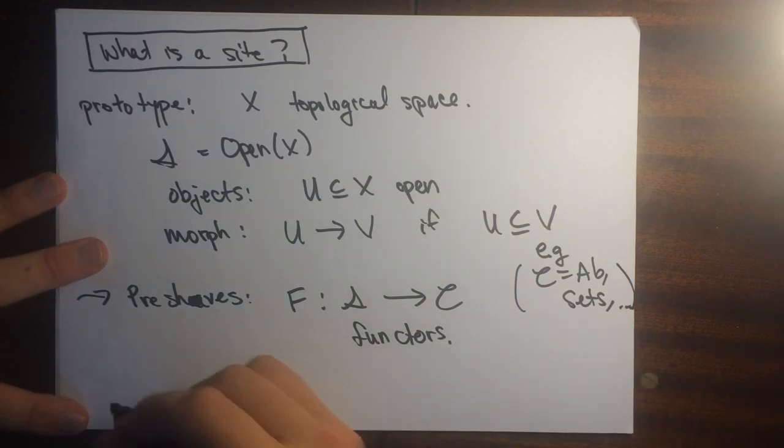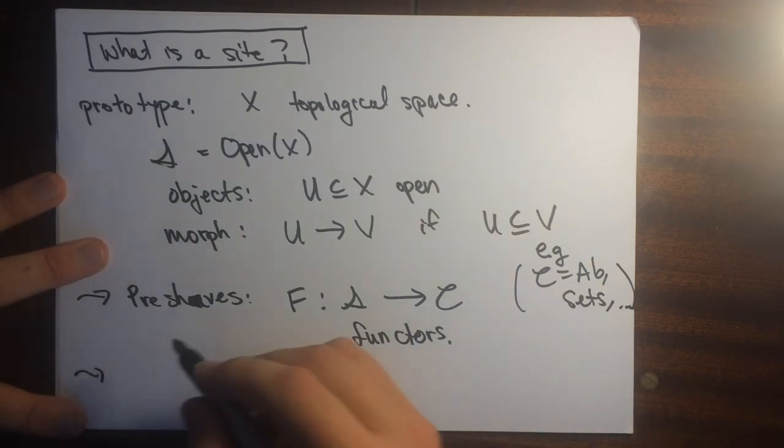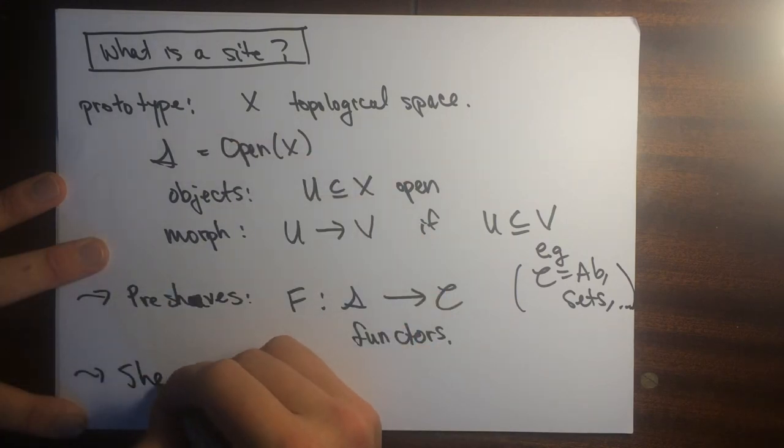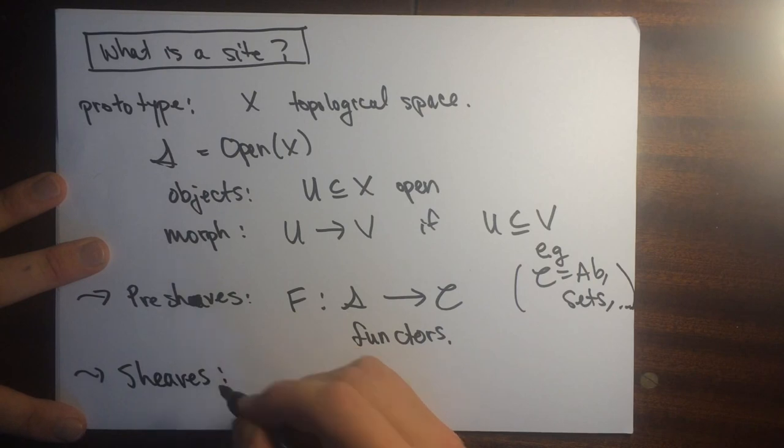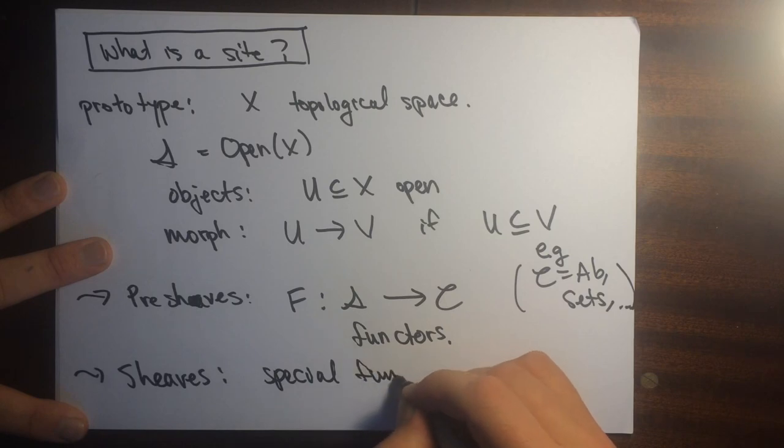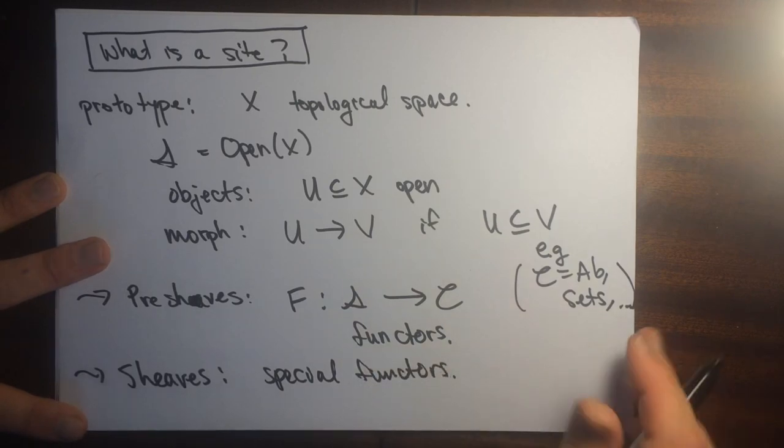And then we can also talk about sheaves. And once we talk about sheaves, we have to talk about, these are special functors. So what is a sheaf? To talk about sheaves, we have to talk about coverings. These things are intertwined with each other.